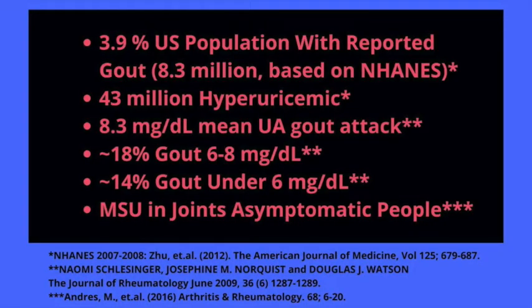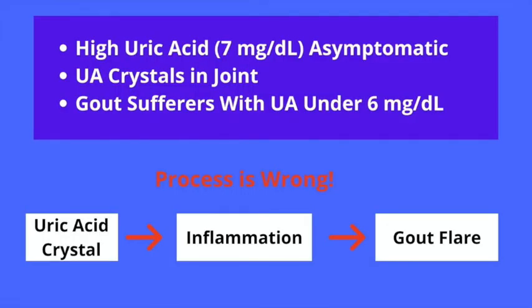When individuals with hyperuricemia but no gout symptoms have their joints aspirated, monosodium urate crystals can be found. So what this data means is that uric acid alone in the joint in the form of a crystal is not sufficient for a gout flare. This suggests that the current hypothesis posited by the medical establishment — the idea that a sodium urate crystal in the joint somehow irritates the joint and causes an inflammatory response that produces the gout flare — may be incorrect.